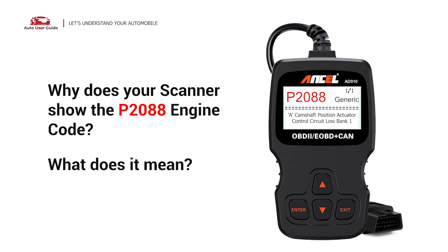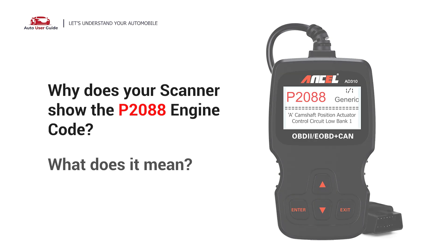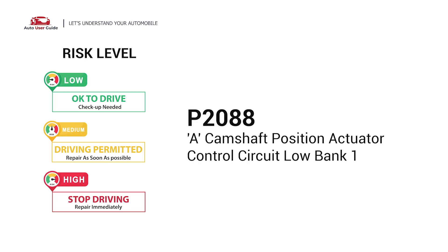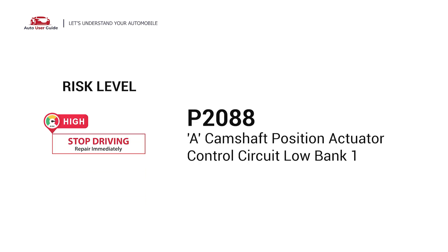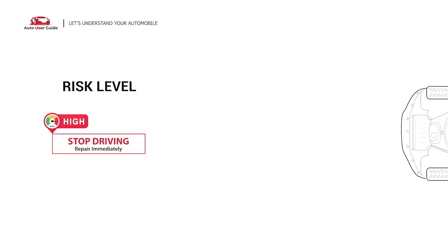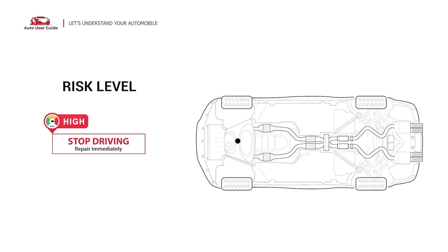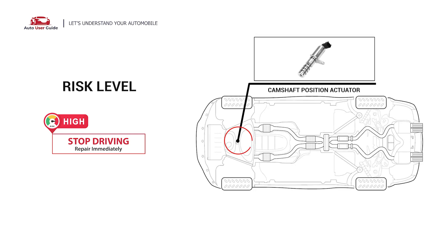Why does your scanner show the P2088 engine code? What does it mean? P2088 is a diagnostic trouble code for A camshaft position actuator control, circuit low, bank 1. It indicates that the PCM has detected a low electrical condition within the A camshaft position actuator control circuit on bank 1.